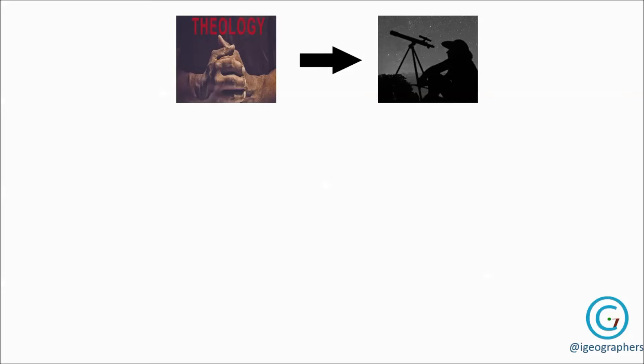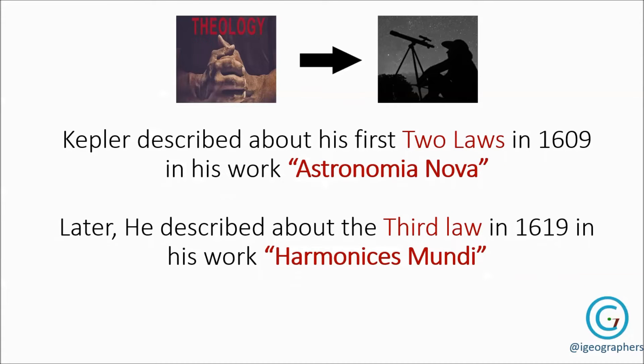No model of the solar system, not even Copernicus' heliocentric model, could explain it. Then it took eight years for Kepler and finally he solved the riddle and described his first two laws of planetary motion in the year 1609 in his work Astronomia Nova. Ten years later he described his third law of planetary motion in the year 1619 in his work Harmonices Mundi.